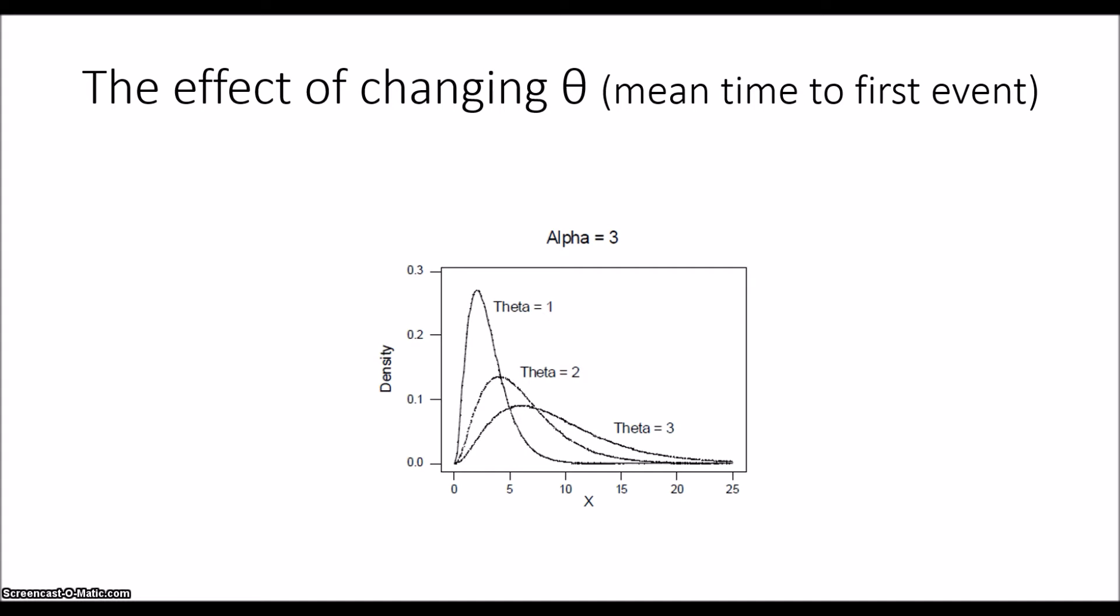Let's take a look at the effect of changing θ on the gamma distribution. So remember θ is the mean time until the first event. So it makes sense that the time until the αth event, here we have α equals 3, so we have the time to the third event, is going to be longer on average when we have a larger value of θ. And we can see we've got skewed distributions.